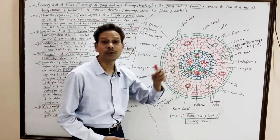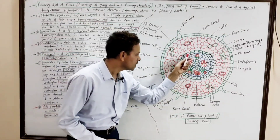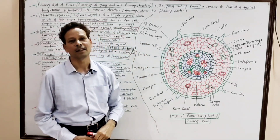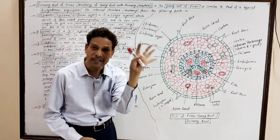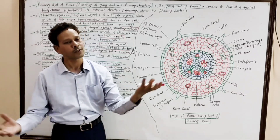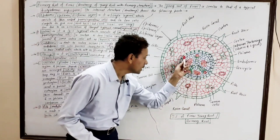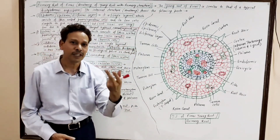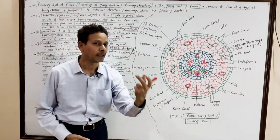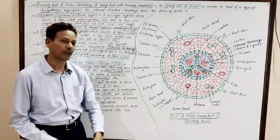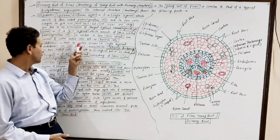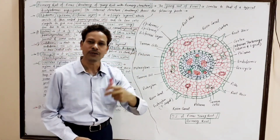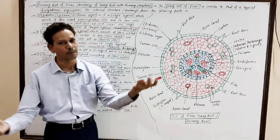Next to the endodermis is the multi-layered pericycle. The pericycle encloses the vascular bundles and consists of thin-walled parenchymatous cells. The very important part is the vascular cylinder — the vascular tissue or vascular bundles.